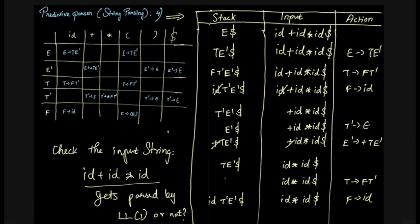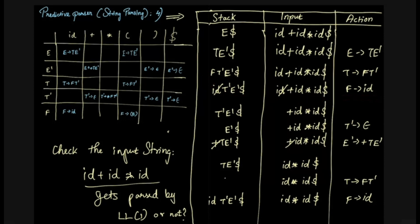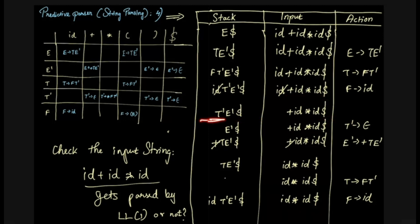If we check this row, there is F and id. If you go to id, and F is in the id column, then I have F tends to id. If I have F, I have to substitute id. If we check this, I have id on the stack and id on the input — that's why I cancel id. ID cancels the id. Then T-dash, E-dash, then id cross id dollar remain.